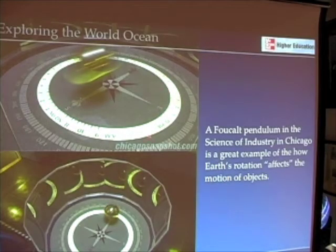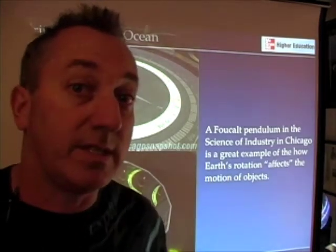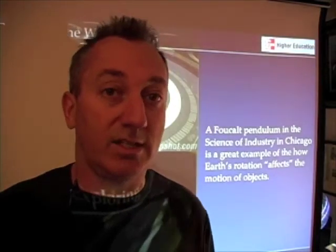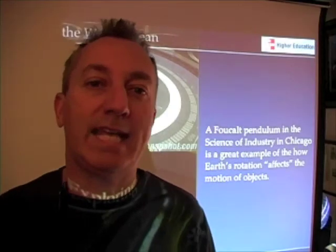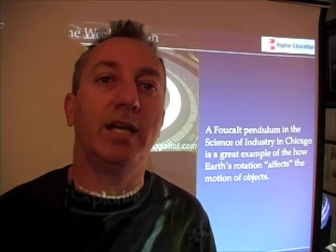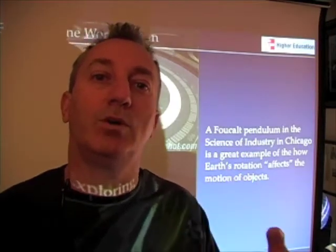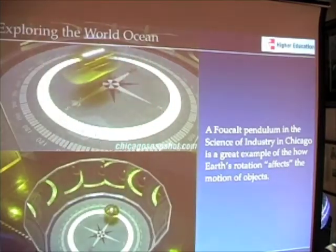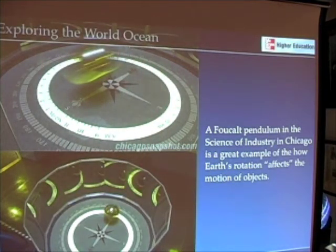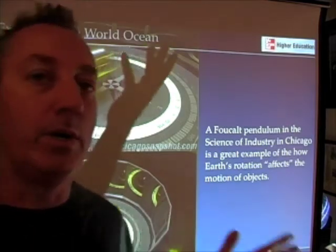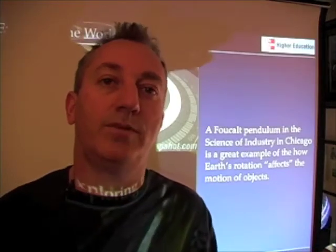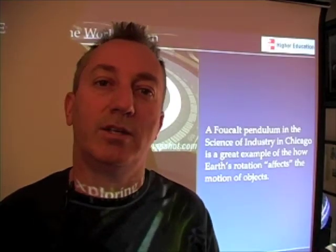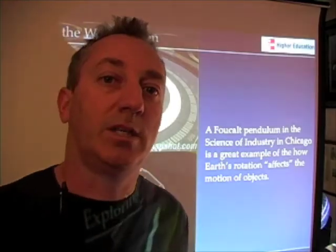It's an apparent change in the direction of the pendulum. It's not really changing, but it looks like it is because the earth is rotating underneath it. The Coriolis effect accounts for this apparent change — it's a correction term for Earth's rotation. So remember, the Coriolis effect has both a tangential component (that eastward velocity component) and a rotational component.